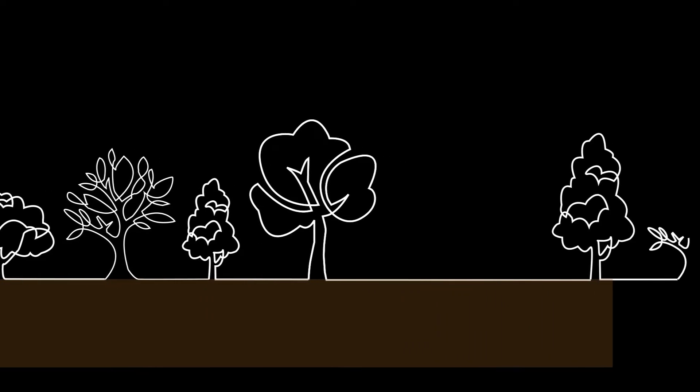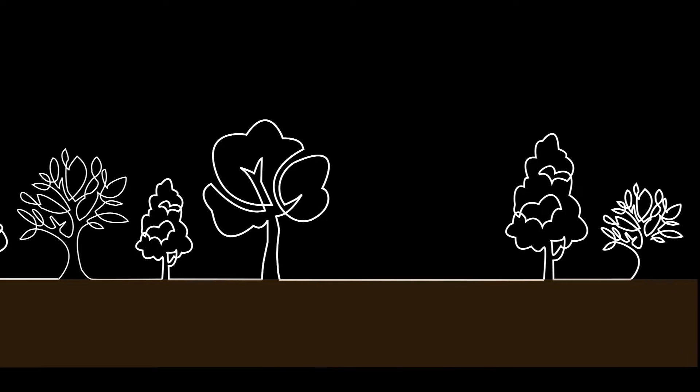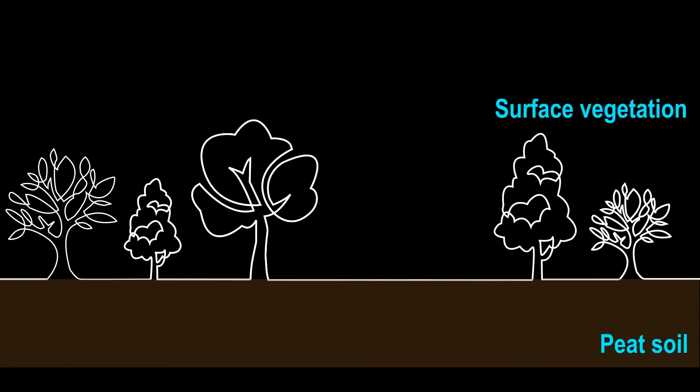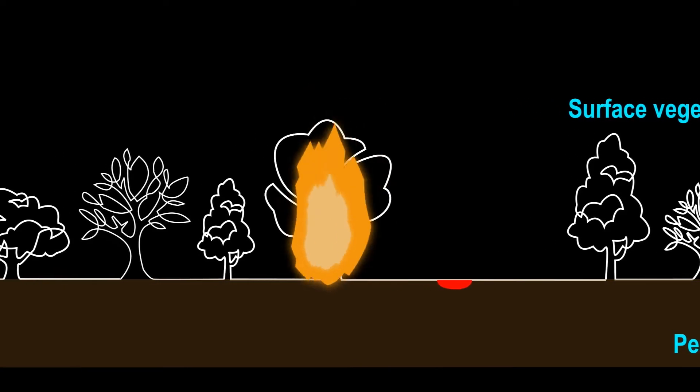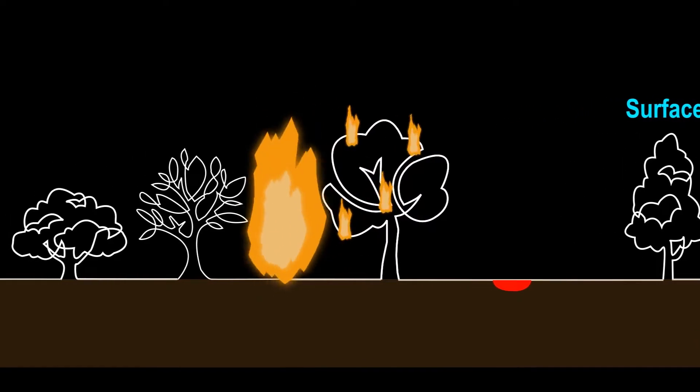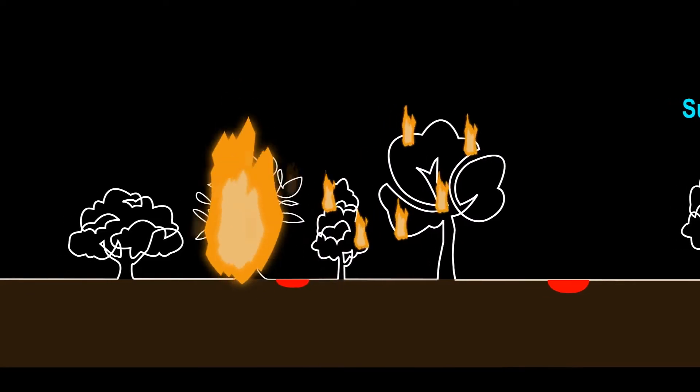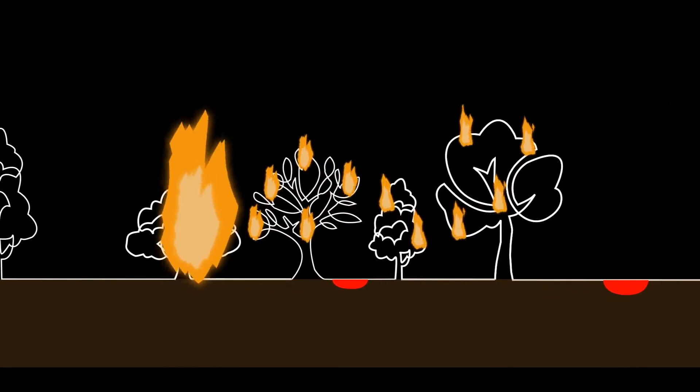In peatland ecosystems, the vegetation and the soil are both vulnerable to fire. When a wildfire happens in a peatland, it will typically start as a flaming fire and consume the trees and the vegetation on the surface.